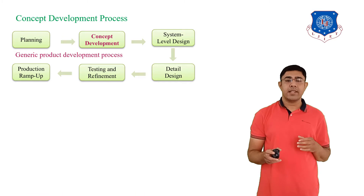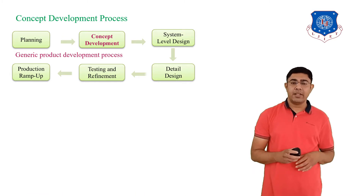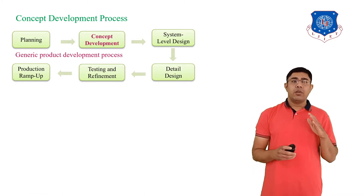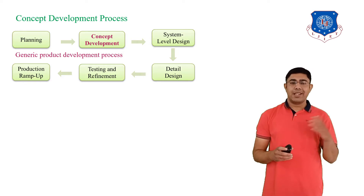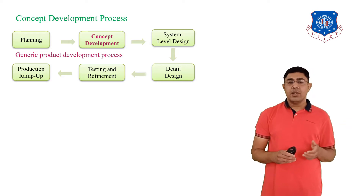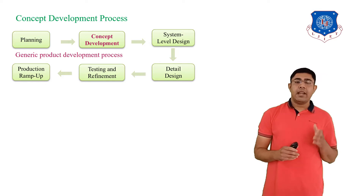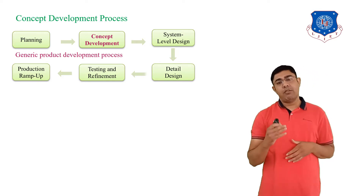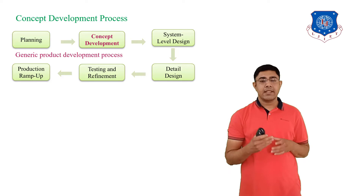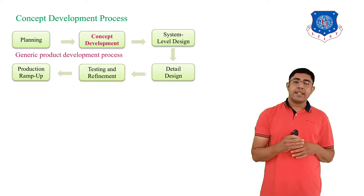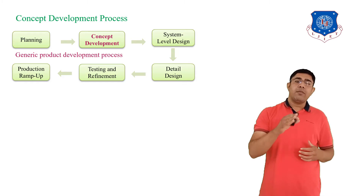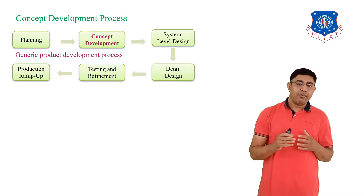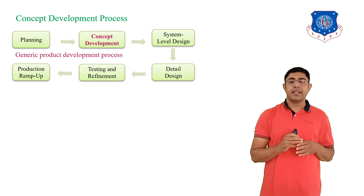I call it the process of generic product development. You all know the generic product development process from the last lecture. There are six stages: planning, concept development, system level design, detail design, testing and refinement, and production framework. If you look at the steps of this generic product development process, the second stage is concept development.